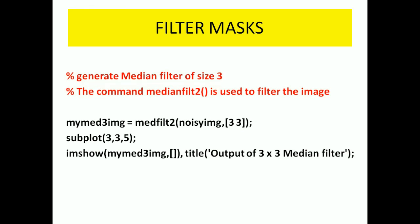Next, here we have to remove the salt and pepper noise. This will be removed by using a median filter of size 3x3 mask. The MATLAB command medfilt2 is used as a filter for that image. So my_median_3x3_image = medfilt2(noisy_image, [3 3]) — the mask of size 3x3 is applied to the noisy image, so the output noise is removed. The subplot position of this image is at fifth, and the title is given as 'output of 3x3 median filter'.